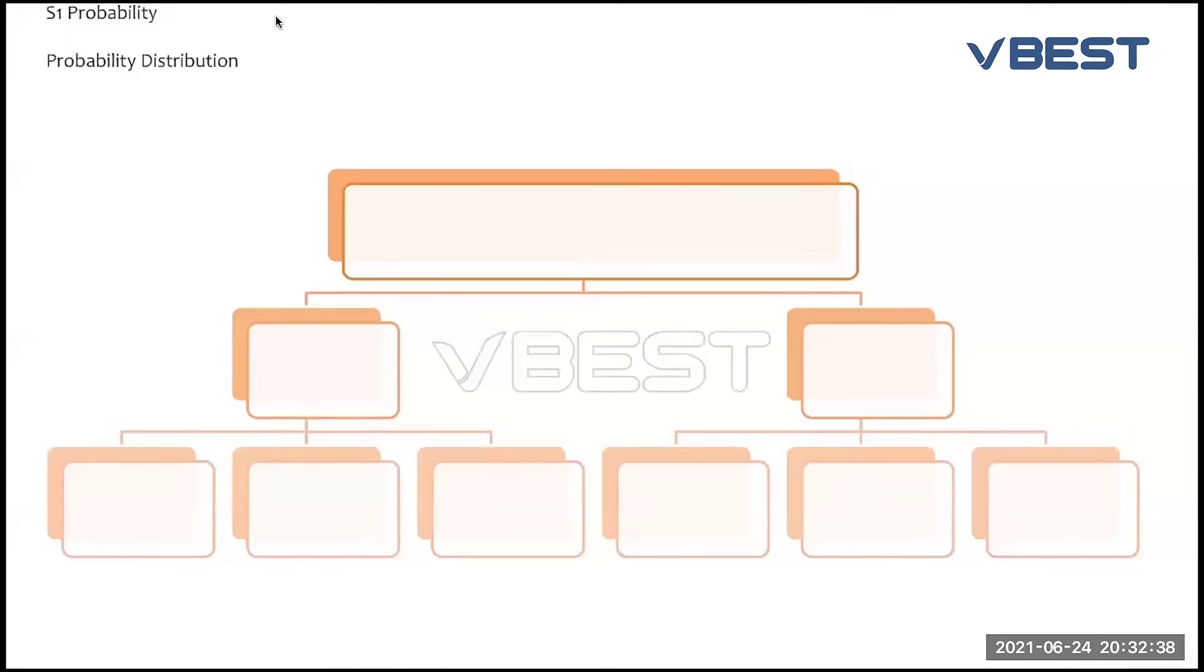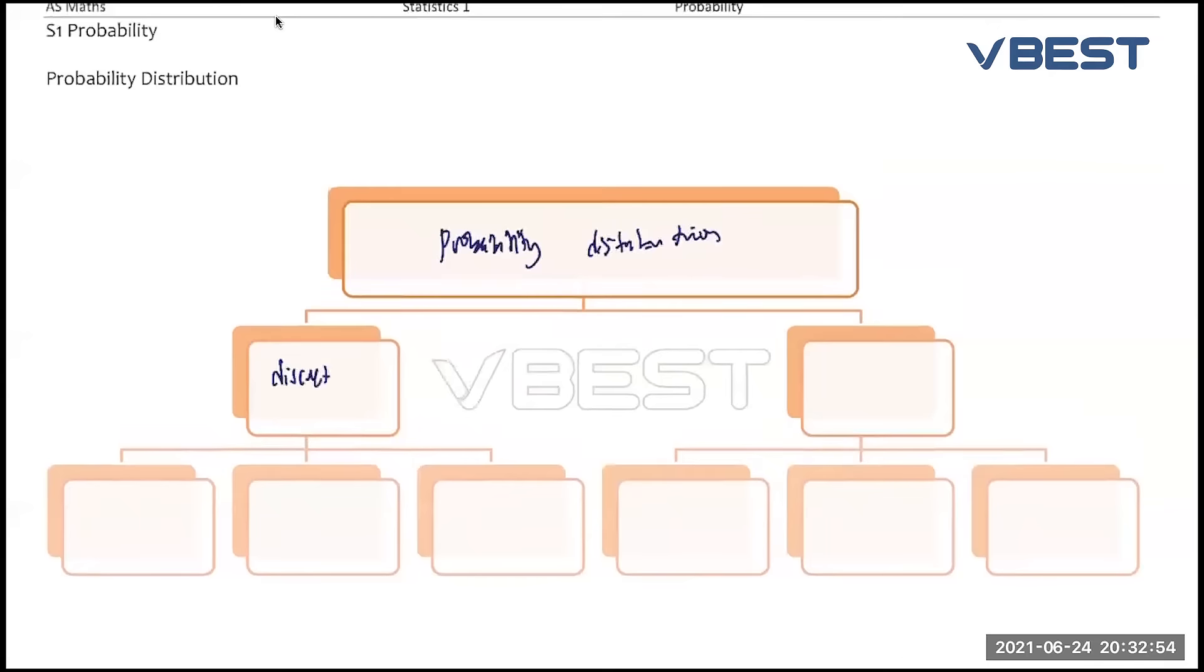The probability distribution means how do we categorize probability. The first one is called discrete random variable. Why do we call it discrete random variable? And then the other one is called continuous random variable.